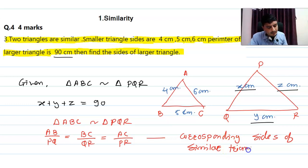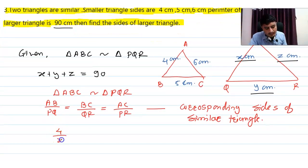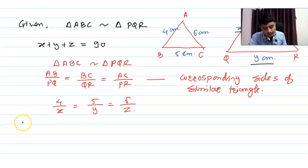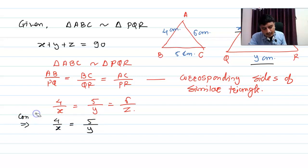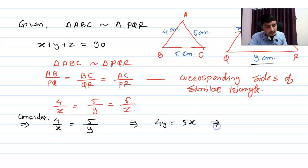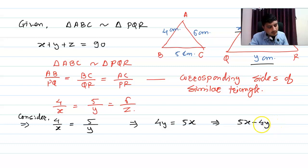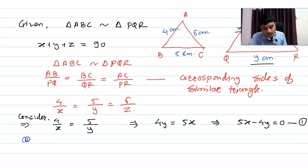From the first two ratios 4/x = 5/y, cross-multiplying gives 4y = 5x, which rearranges to 5x − 4y = 0 (equation 1). From the first and last ratios 4/x = 6/z, simplifying gives 2/x = 3/z.